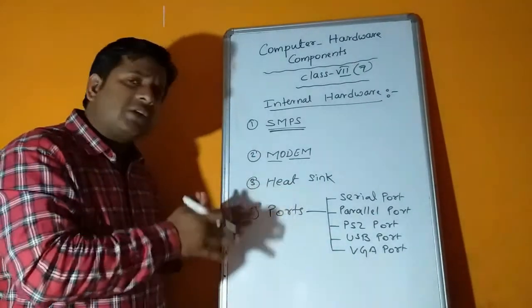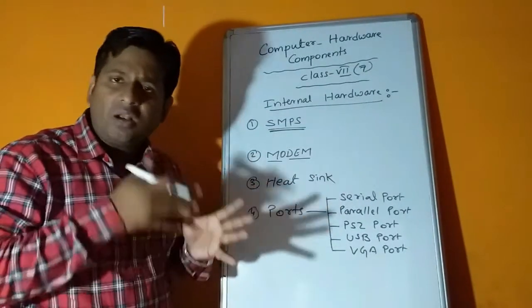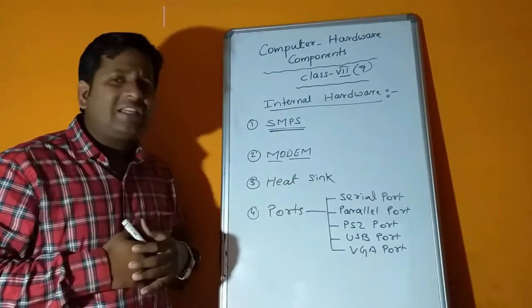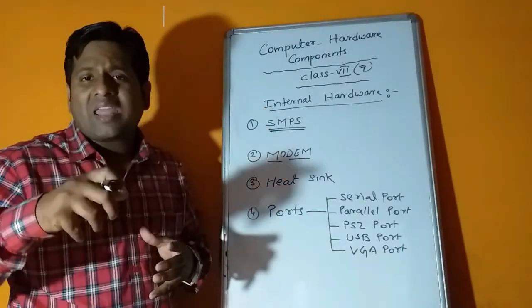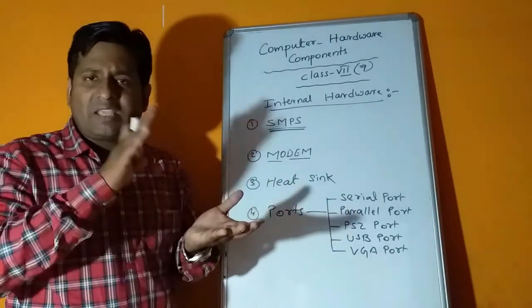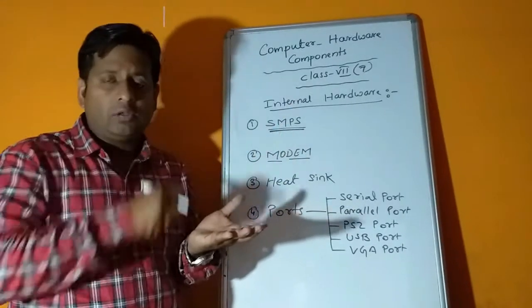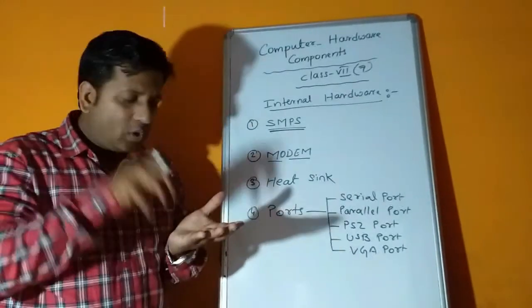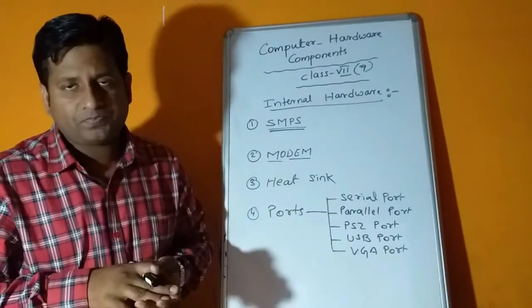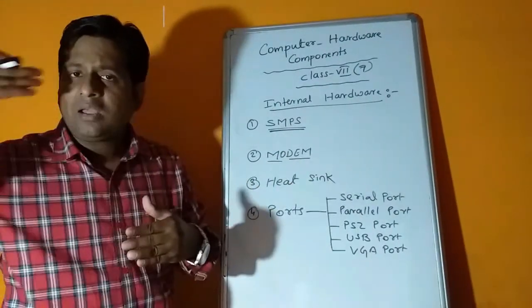This conversion of signals is done by a device known as modem. Modem is of two types: internal modem and external modem, used for internet connections. Next we have heat sink. Heat sink is like an exhaust fan. The processor does all sorts of work and releases lots of heat, so to make the processor cool we need a heat sink.